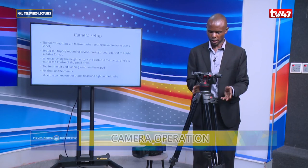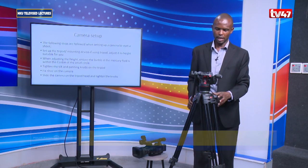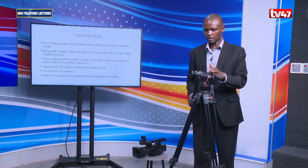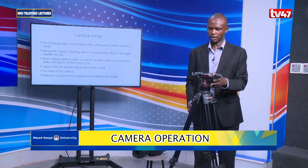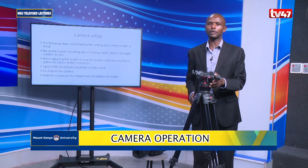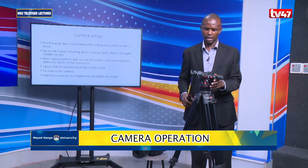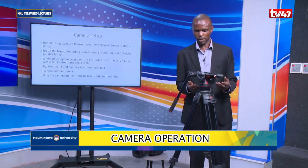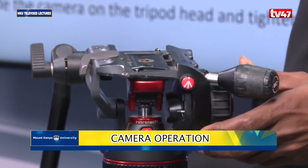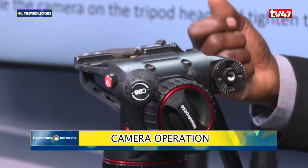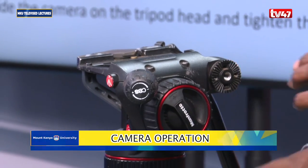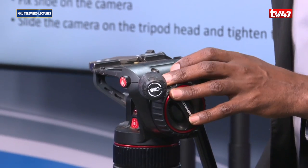On your tripod, apart from the legs, we have the head part of the tripod. This is the part that I am able to move, which is what I am referring to as the tripod head. It contains different knobs that will help you adjust so that when you are making camera movements it will be easy for you to do that.